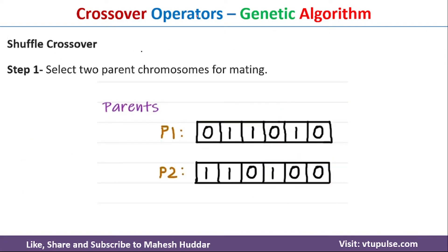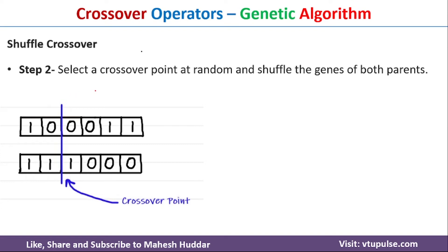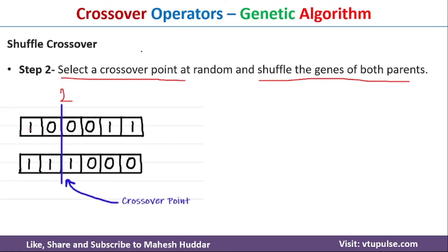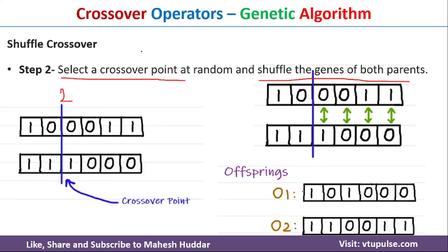The next crossover operator is shuffle crossover. We select two parents P1 and P2. There are two things to do: first, select a single random crossover point — I selected position two — and second, shuffle the genes of both parents randomly. The original P1 was 0, 1, 1, 0, 1, 0, but after shuffling we got 1, 0, 0, 0, 1, 1. Once shuffled, we apply single point crossover by swapping genes after the crossover point, giving us offspring O1 and O2.